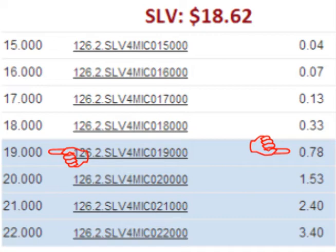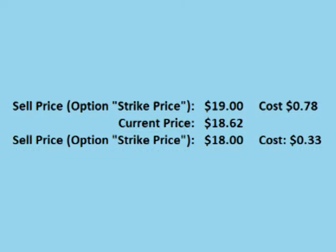Instead of locking in a sell price of $18 per share for an upfront cost of $0.33 per share, the trader locks in a sell price of $19 a share for an upfront cost of $0.78 per share. Notice that the trader locks in the right to sell the stock for $19, but the stock is currently trading at only $18.62 per share. Therefore, the trader locks in the right to sell the stock for a price that is $0.38 a share higher than the stock is currently trading for.